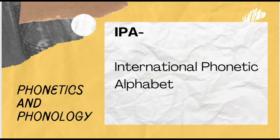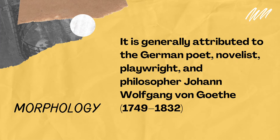Linguists use the International Phonetic Alphabet, or the IPA, to determine the sounds — especially words with the same spelling but different meaning. Morphology is generally attributed to the German poet, novelist, playwright, and philosopher Johann Wolfgang von Goethe, who coined it early in the 19th century in a biological context.